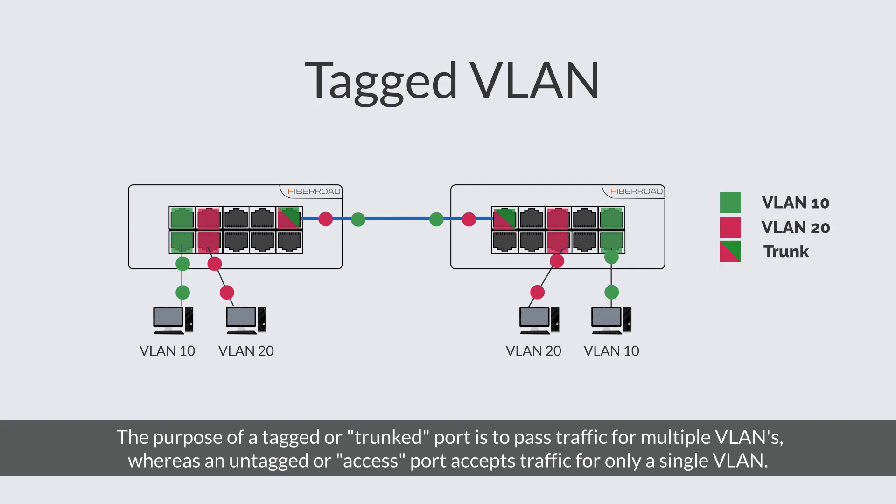The purpose of a tagged or trunked port is to pass traffic for multiple VLANs, whereas an untagged or access port accepts traffic for only a single VLAN.